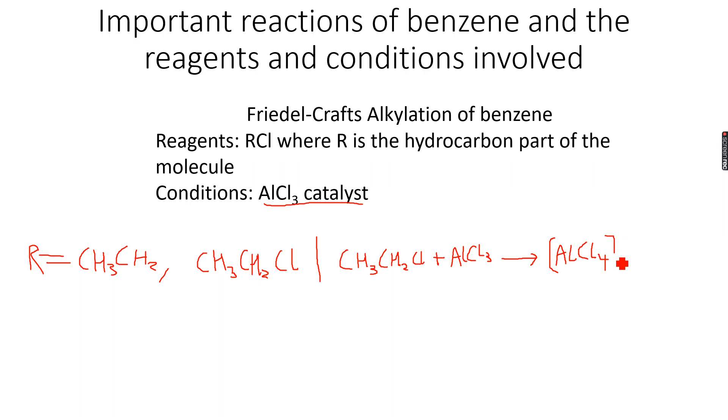The complex, like it did in the case when we were adding bromine - you saw that it gave a complex of AlCl3Br-. So right now we have AlCl4- plus CH3CH2+. So CH3CH2+ - we have this ethyl group now and it has a positive charge on it.